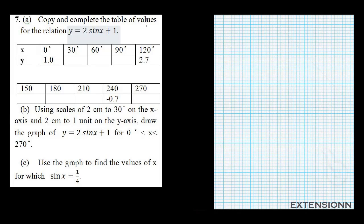This question says copy and complete the table of values for the relation y equals 2 sin x plus 1. What we'll do is find the missing values of y using the values of x ranging from 0 down to 270. For example, when x is 30, we substitute 30: we have 2 sin 30 plus 1, then multiply to find the value of y. We do that for each value to complete the table.